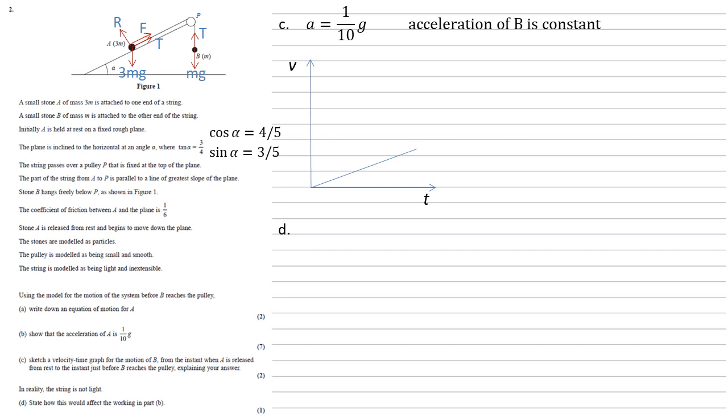In reality, the string is not light. So for part d, we need to state how this would affect the working in part b. Well, as we've got different lengths of string each side and it's changing as our particles move, if we gave some mass to the string, this would mean the tension acting on a would be different to the tension acting on b.